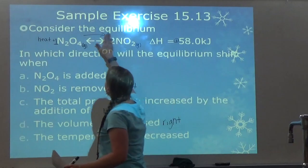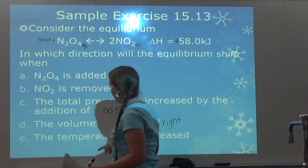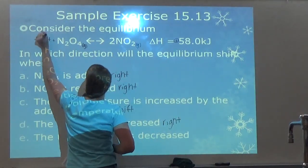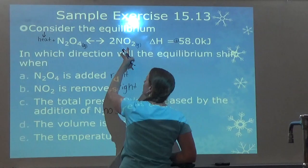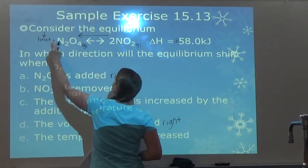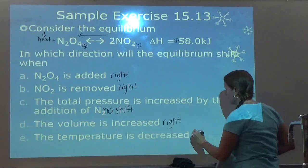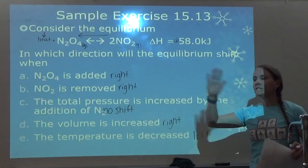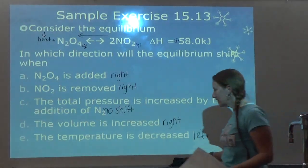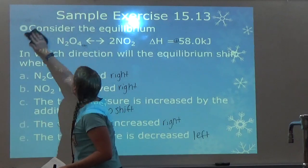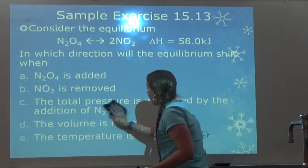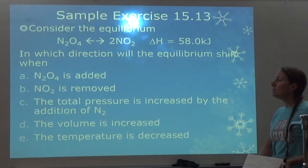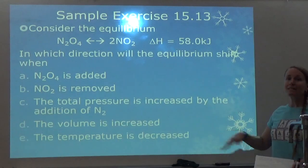Part E is a temperature change: the temperature is decreased. Remember, heat is considered a reactant here. If I decrease temperature, it's going to want to create more heat, so it is going to shift to the left. In summary: if you take away something, it wants to make more; if you add something, it wants to get rid of it. For volume and pressure, more particles want more volume; less particles want less volume. And if you change pressure with an inert gas, nothing happens.